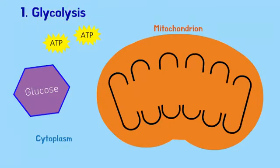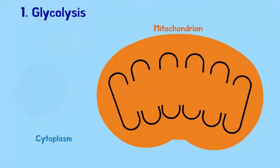This process requires two ATP in order to get started. So basically, before we can get energy, we have to use a little bit of energy. At the end of glycolysis, we have made four ATP, which means we get back the two we used plus two extra.